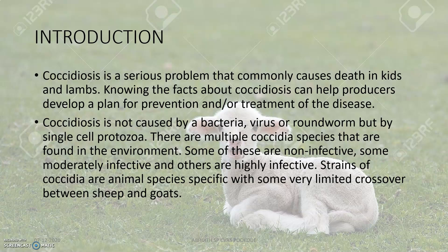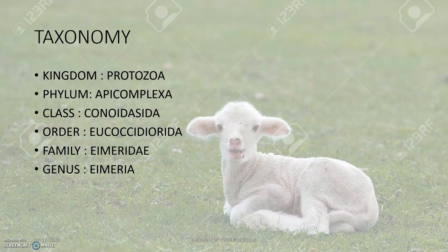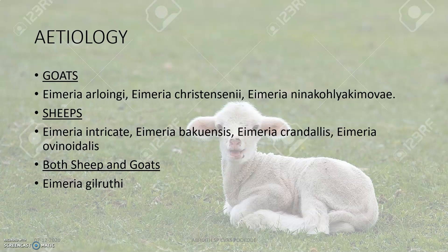Coccidiosis is caused by a single-cell protozoa which multiplies inside the intestine, producing many problems in the goat and sheep industry. They belong to the kingdom Protozoa, phylum Apicomplexa, class Conoidasida, order Eucoccidiorida, family Eimeriidae, and the genus is Eimeria.